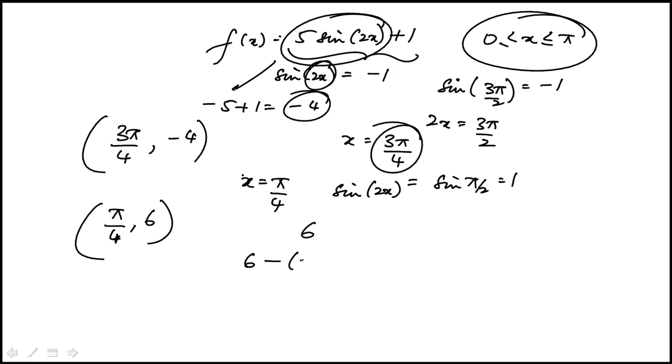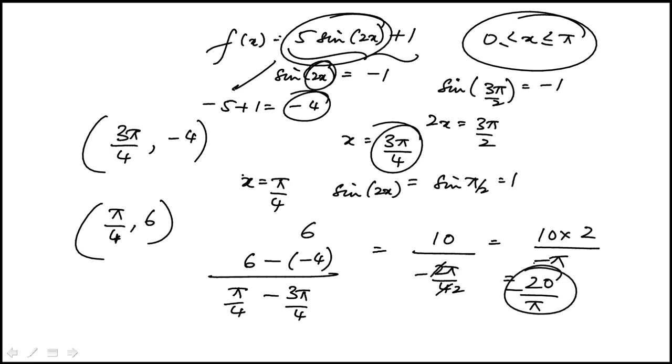To find the slope, difference in the y values over difference in the x values. So this is going to be 10 over minus 2π over 4. That becomes 2 over minus π. So this is 20 over π. And don't forget the minus. So the answer is minus 20 over π, which is choice A.